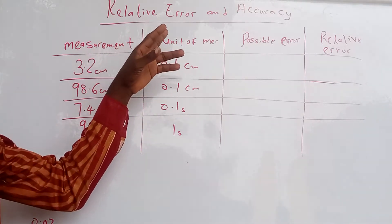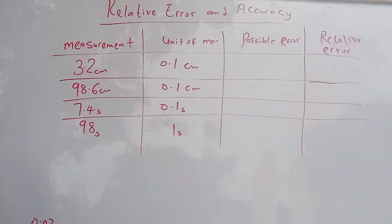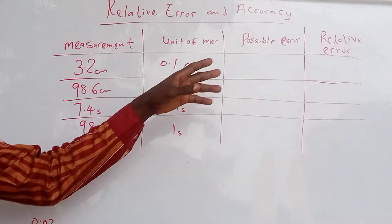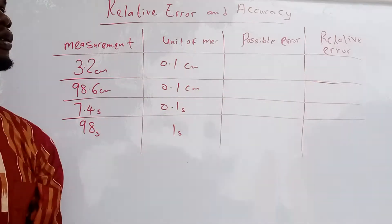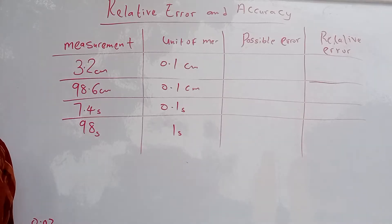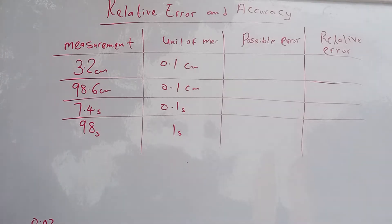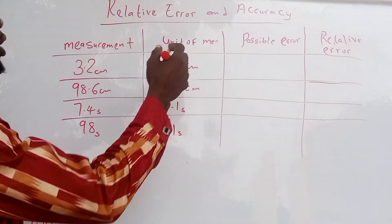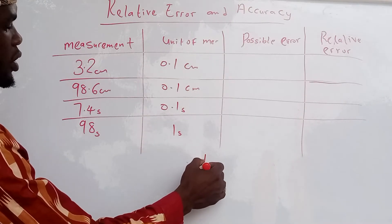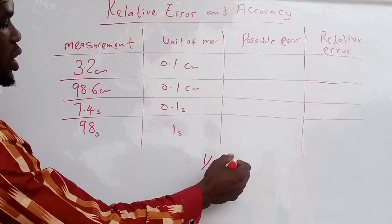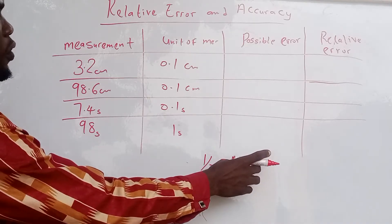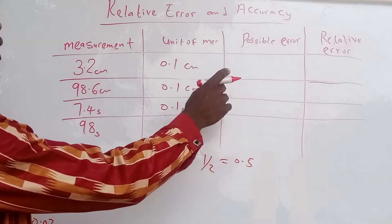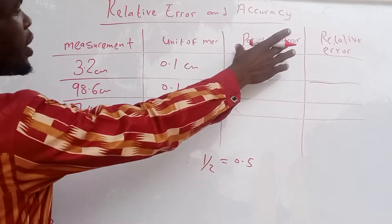Today's topic is relative error and absolute error — how to find our possible error and how to find our relative error. Our normal error is 1 over 2, which is 0.5. Now to find our possible error...